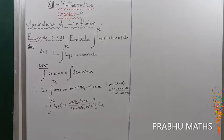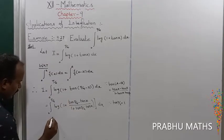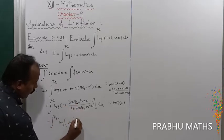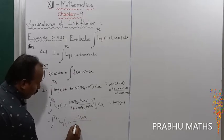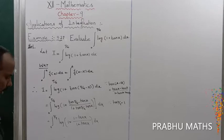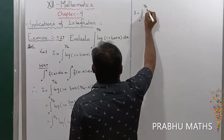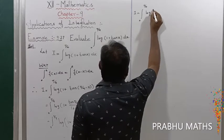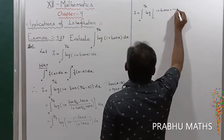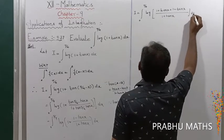Since tan(π/4) = tan 45° = 1, we substitute 1 in place of tan(π/4). So I equals integral from 0 to π/4 of log(1 + (1 − tan x) / (1 + tan x)) dx. Next, by cross multiplication of the denominator term, the numerator becomes (1 + tan x) + (1 − tan x).